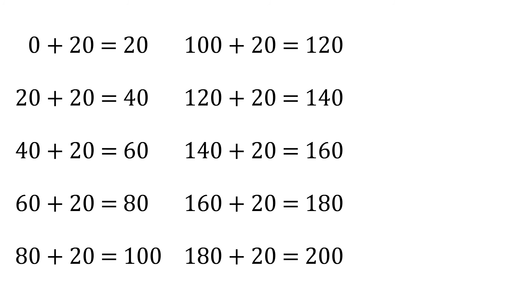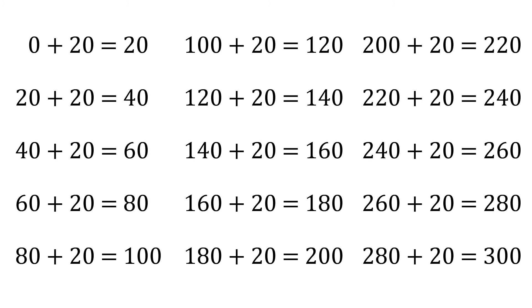One hundred eighty plus twenty equals two hundred. Two hundred plus twenty equals two hundred twenty. Two hundred twenty plus twenty equals two hundred forty. Two hundred forty plus twenty equals two hundred sixty. Two hundred sixty plus twenty equals two hundred eighty, and two hundred eighty plus twenty equals three hundred.